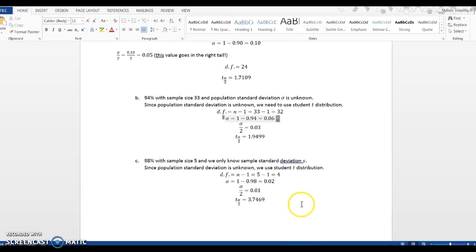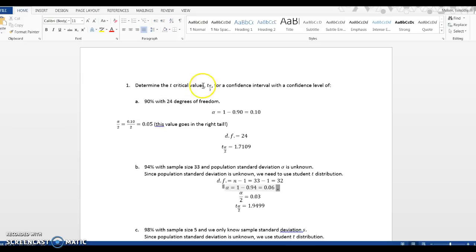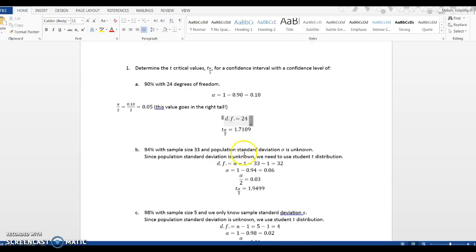A couple things to point out: we use the T critical value, student T's distribution, if we do not know population standard deviation or if we only know sample standard deviation. Then we need to enter the degrees of freedom, use student T's distribution, and otherwise it works fairly similar to computing Z scores.